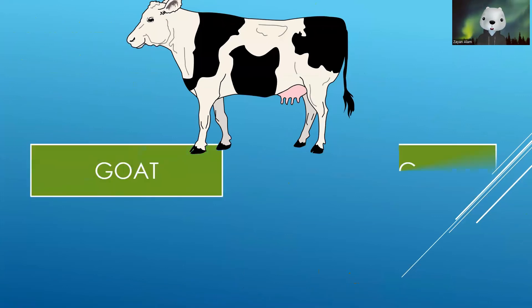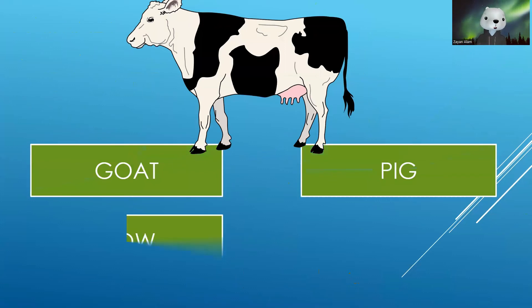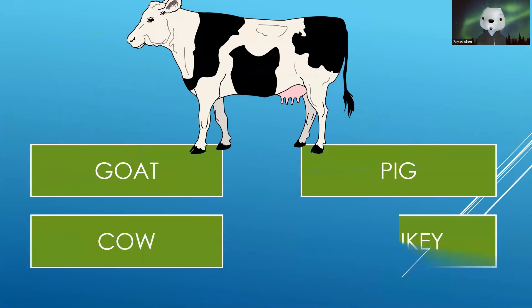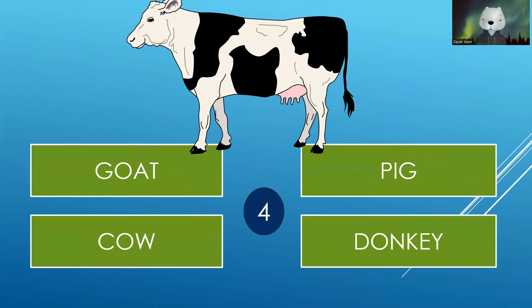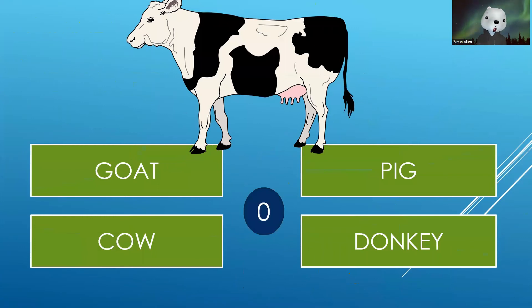The last one — identify this one. Goat, Pig, Cow or Donkey. Your time starts now. The correct answer is Goat.